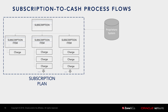Once we've brought in the usage data and mapped it to our subscriptions, we need to run what we call a rating process. The rating process does all the math — each customer may have their own unique pricing and their own unique consumption, and we calculate what we should bill each particular customer for each billing run.